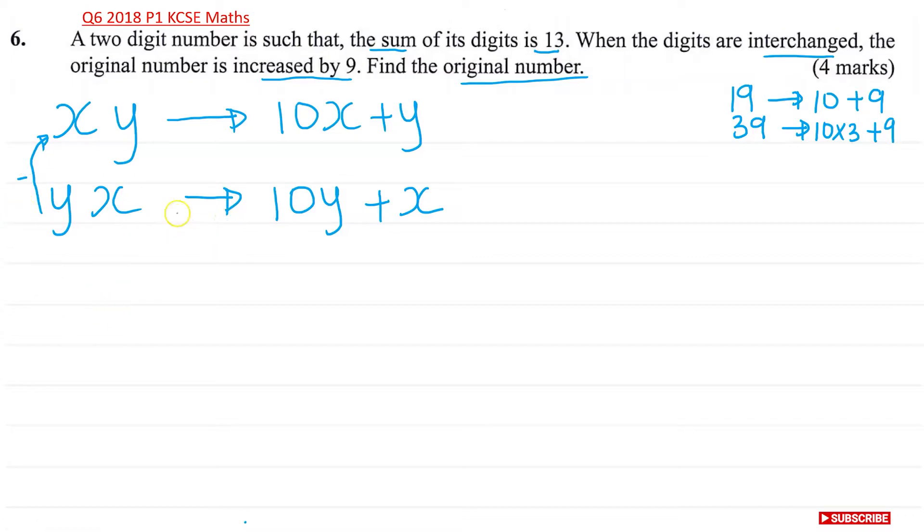So I'm going to do my second number, YX. So I'll write it here for you to see. So if I do YX minus XY, then I should get a 9. Now my YX is 10Y plus X. So 10Y plus X minus my original number, 10X plus Y. This should give me a 9.